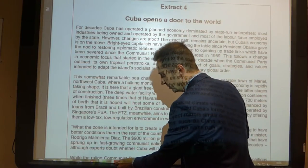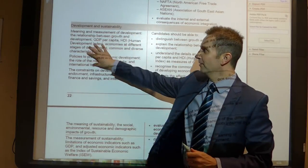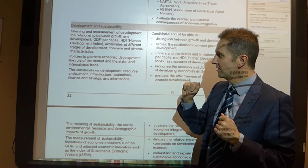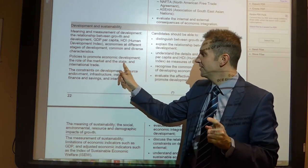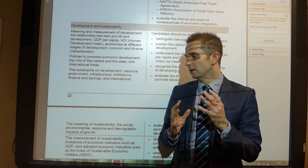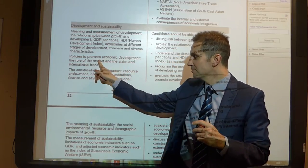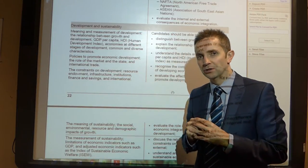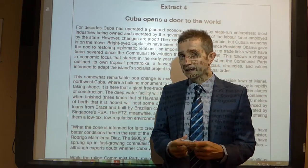Regarding the specification, I think we're looking somewhere in the area of development and sustainability — economic development. The interesting thing on this one is policies to promote economic development, the role of the market and the state, and international trade. These three things are all issues within extract four: the state, the market, and the role of international trade. This is where this particular question is really stemming from and where we need to be looking when considering what the likely question will be.